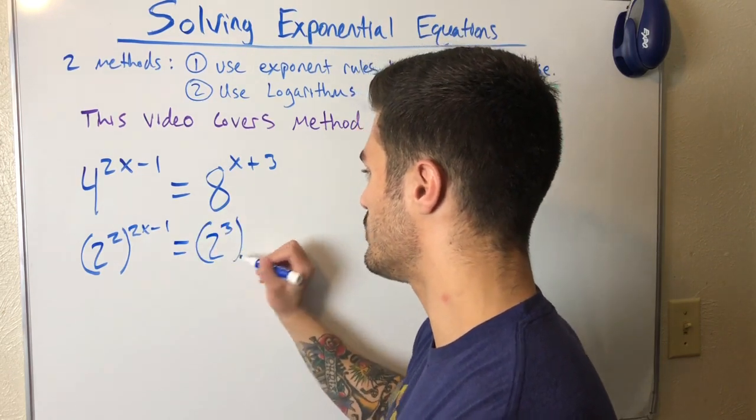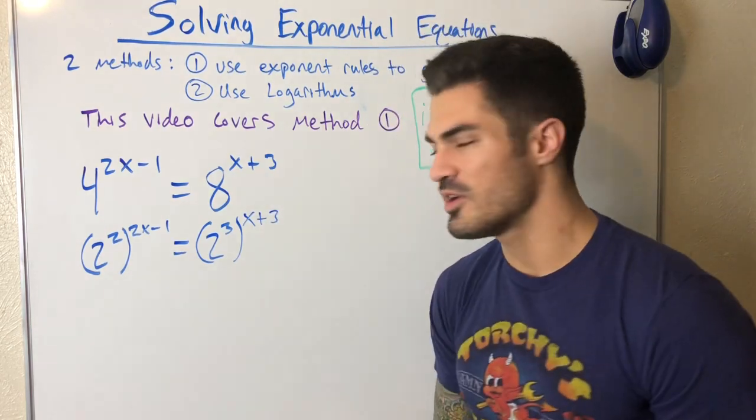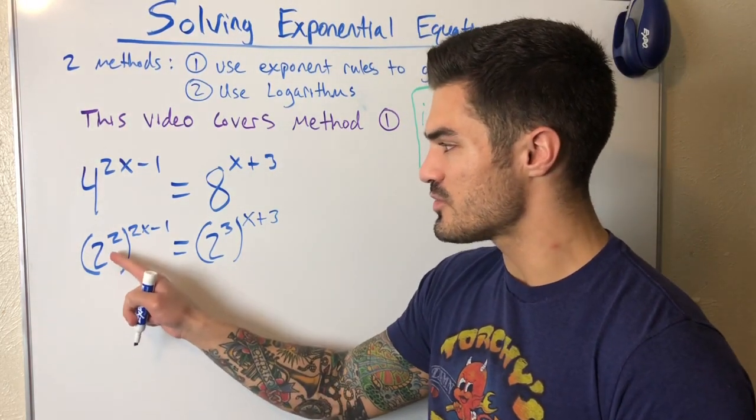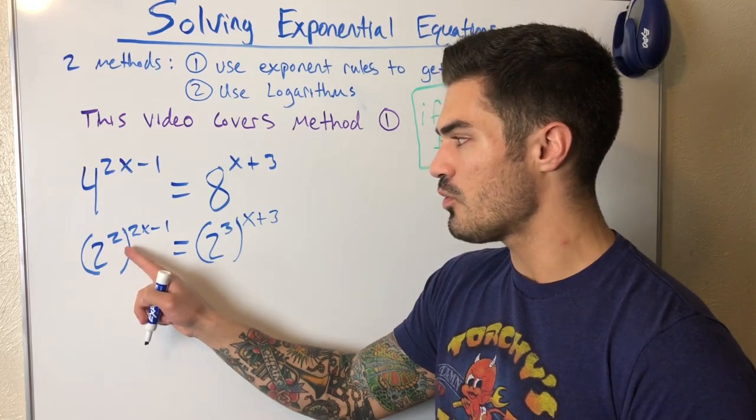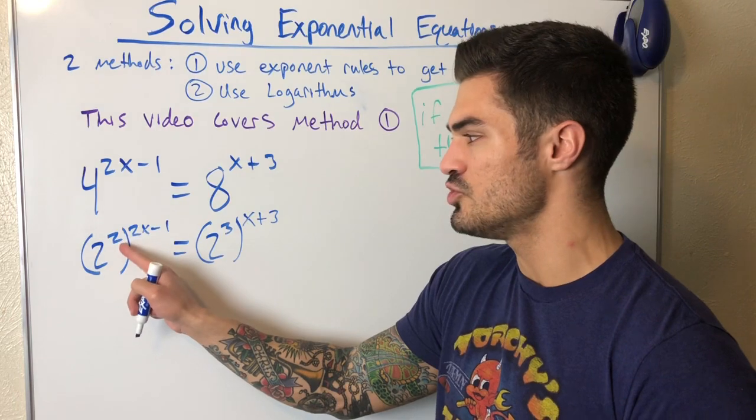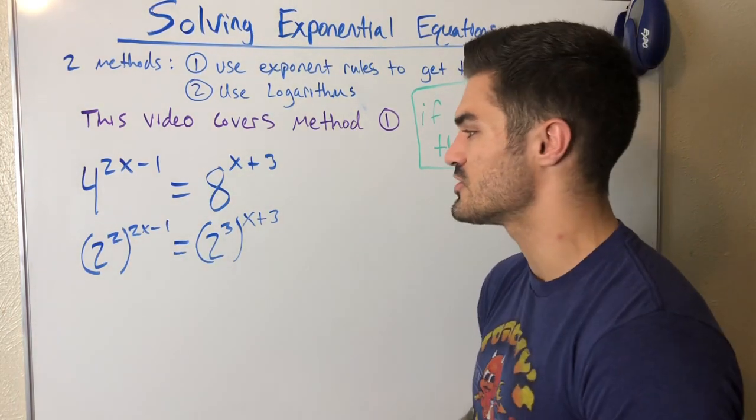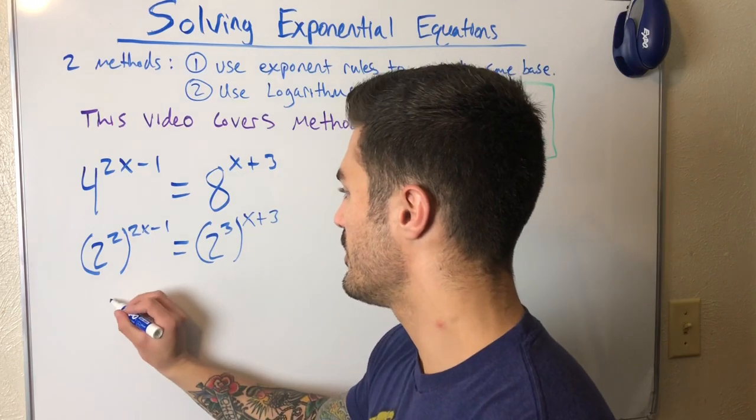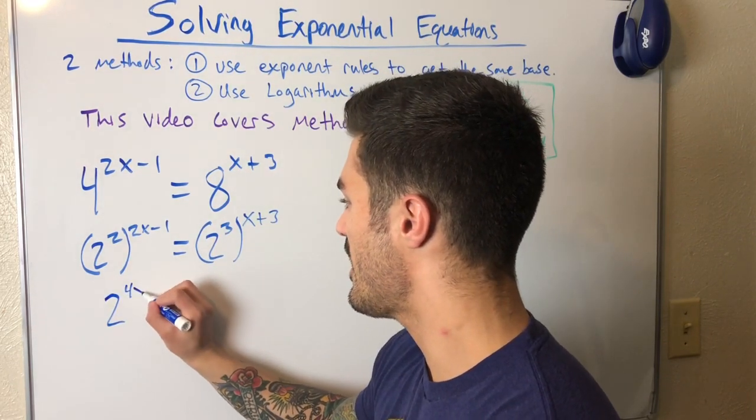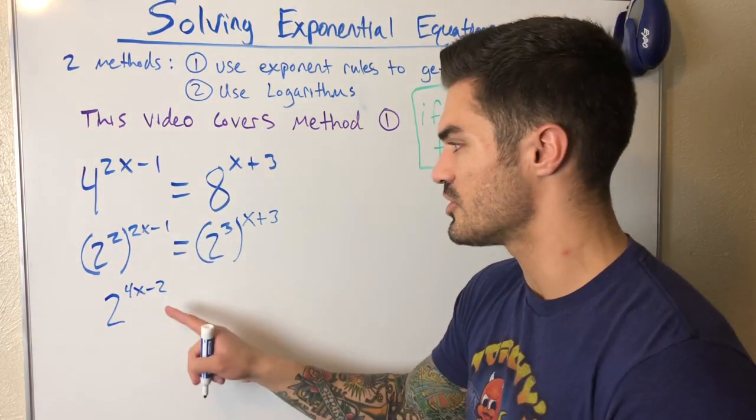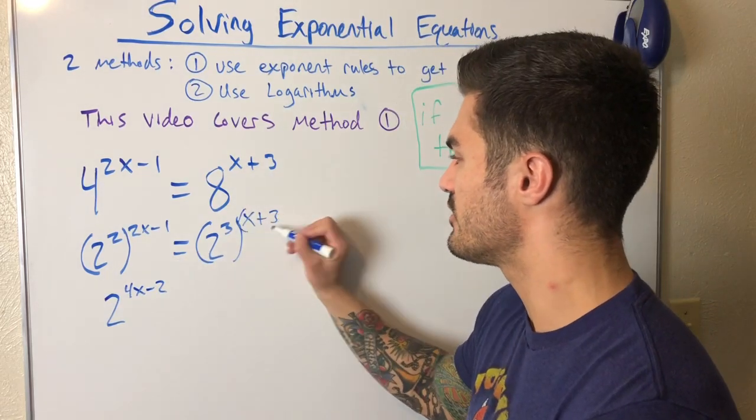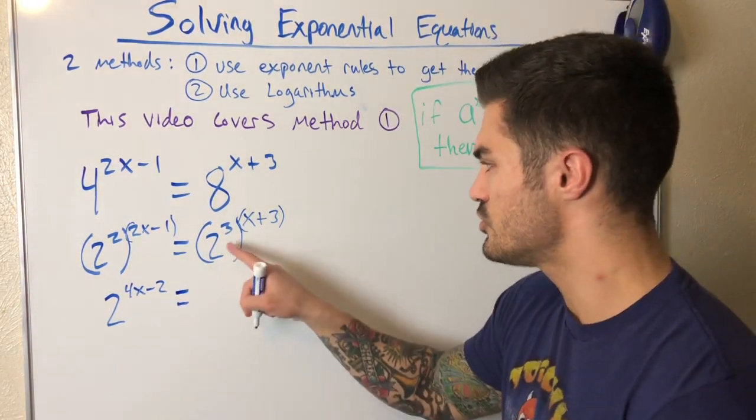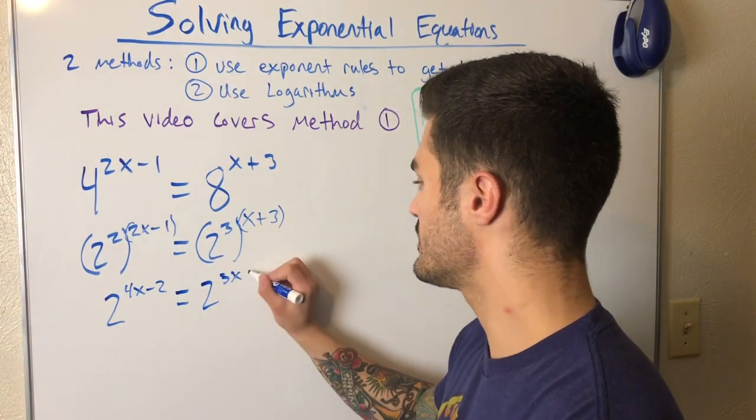So two cubed, that's what eight equals, two cubed is eight to the x plus three. Now I need to be real careful because I still technically have four here as the base and eight. I need to get this two by itself so I can use my exponent rules where I have a power to a power. That means I multiply, but I have to multiply the two to everything, to two x and to negative one. So make sure you multiply through. I have two to the four x minus two equals two to the three x plus nine.